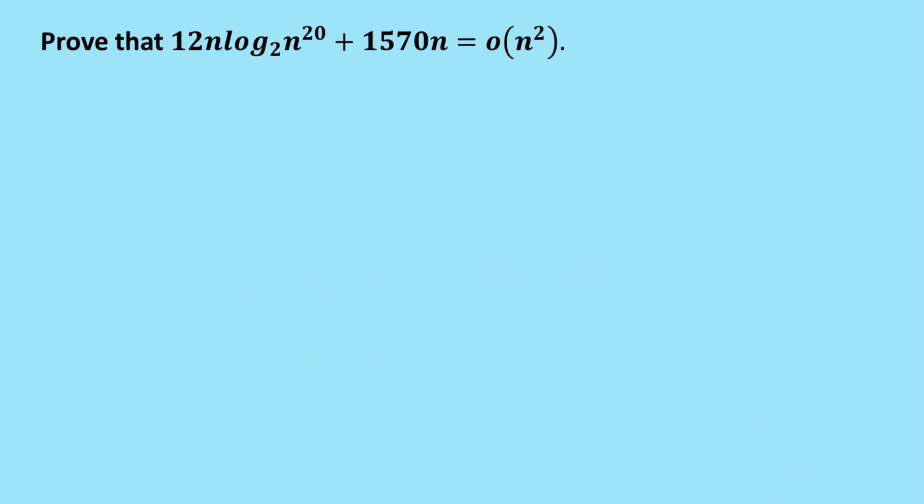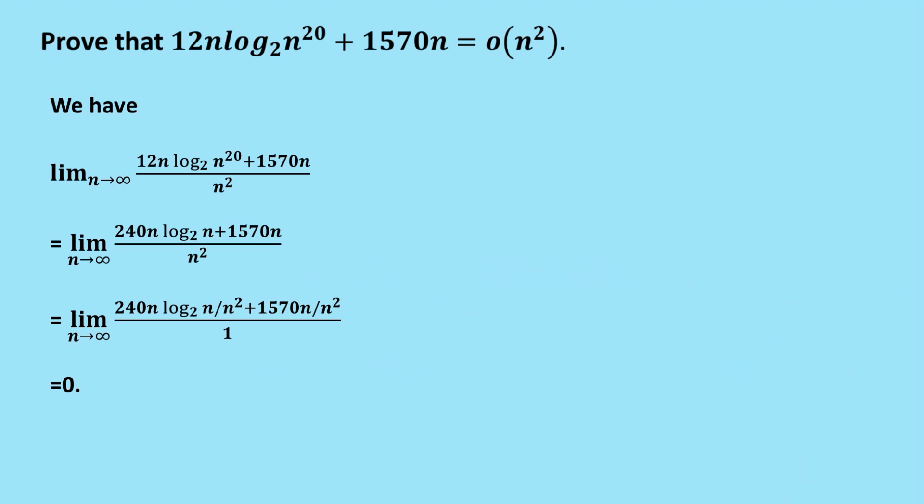Now, on to the second question. We use the same idea, so I've created a limit as n goes to infinity of the first function, the left-hand function, divided by the right-hand function. We can see here this n^20, and using one of the log rules, we can take that 20 outside to the front.